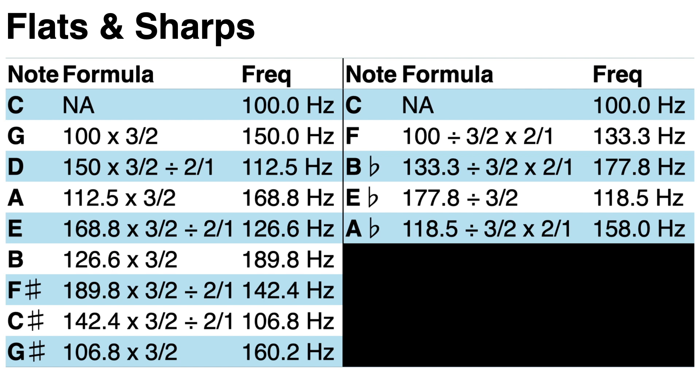Whereas to find the note A flat, we start on the C, and we go down by fifths, rising up an octave to stay within the same octave range. Now doing this, notice that G sharp is 160.2 hertz, while A flat is 158.0 hertz. So they are not quite the same note.